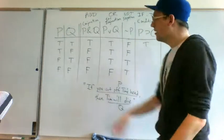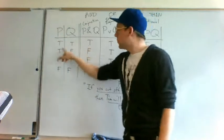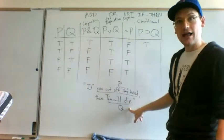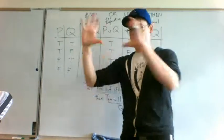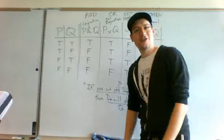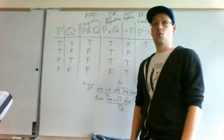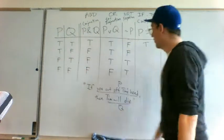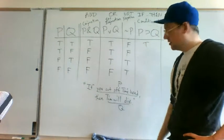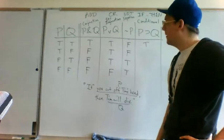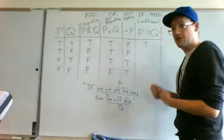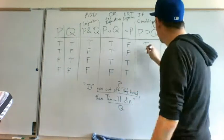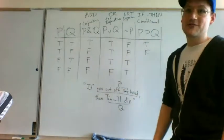Now here's where things get more interesting. What if the first part happens — my head is cut off — but the second thing doesn't happen — I don't die? You cut off my head and I'm still alive. You'd think: well, Tim's head was cut off, he didn't die — that's a counterexample to that claim. If the first thing happened without the second thing, then whoever made this claim would have to acknowledge that what they said was false.